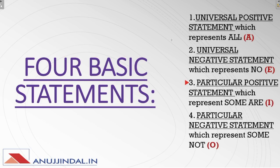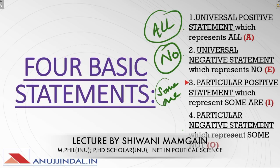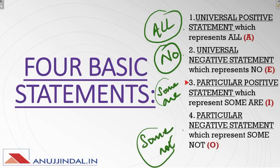Then come the four basic statements. The first statement is the universal positive statement, which represents 'all'. Then comes the universal negative statement, which represents 'no'. Then comes the particular positive statement — for example, some mammals are dogs, some mammals are human. Fourthly, the particular negative statement, which represents 'some not'. All these four statements have four symbols: for 'all' you use A, for 'no' you use E, for 'some are' you use I, and for 'some not' you use O.